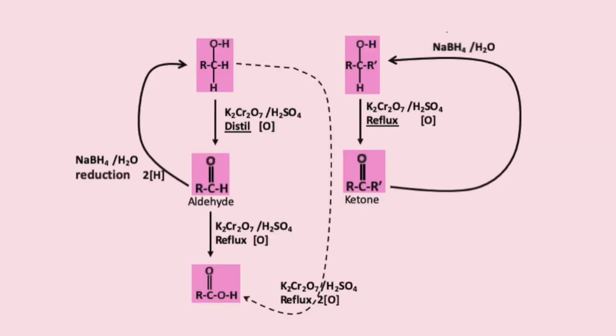Both ketones and aldehydes are involved in oxidation and reduction reactions — you should be aware of some of these from year one organic chemistry. The oxidizing agent we use is acidified potassium dichromate, and the reducing agent is NaBH4 / H2O. A primary alcohol can be distilled to produce an aldehyde, or refluxed to produce a carboxylic acid. An aldehyde can be reduced to a primary alcohol. On the other side, a secondary alcohol can be refluxed to produce a ketone, and a ketone can be reduced to produce a secondary alcohol.